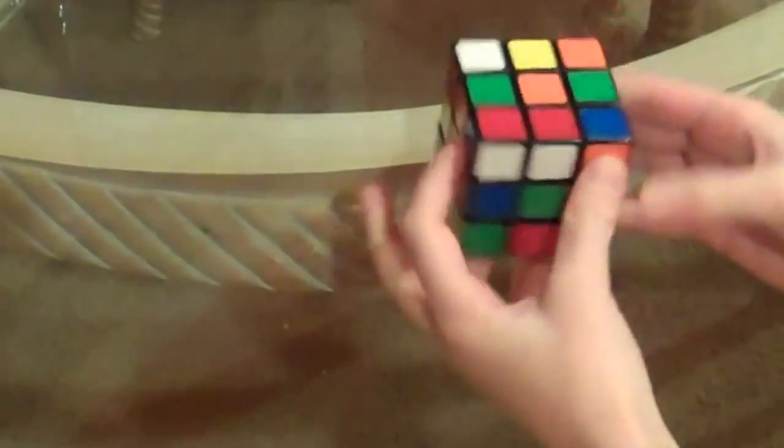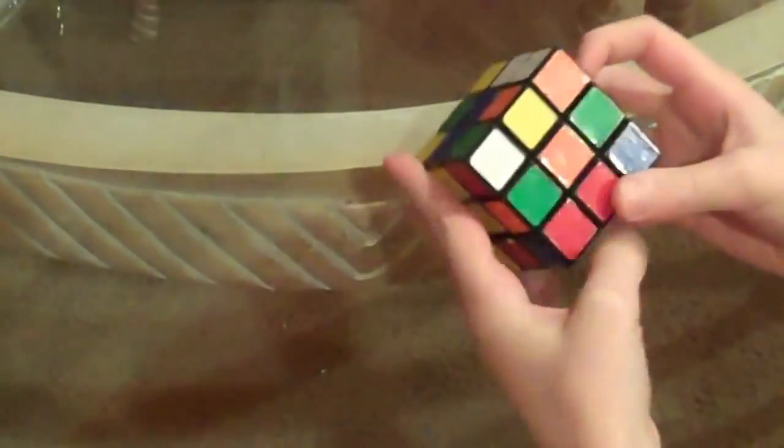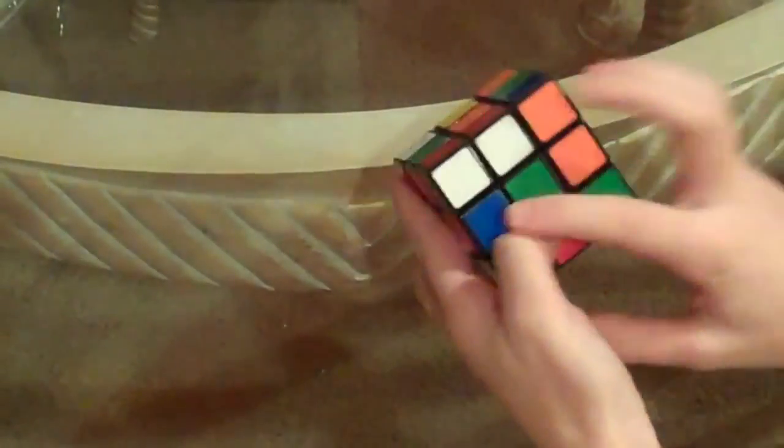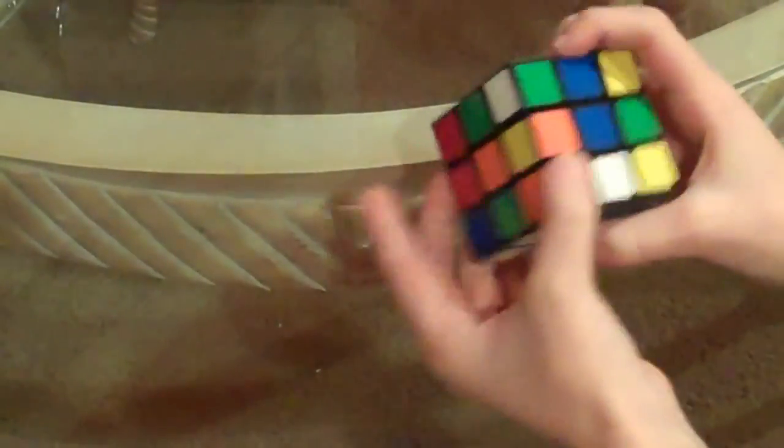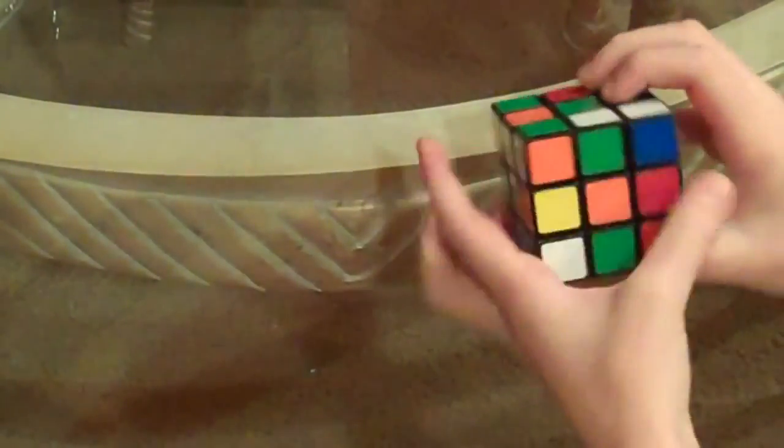First I choose orange all the time. I just like it. So you got to know that the middle pieces do not move. You only move the middle row, not the middle pieces.